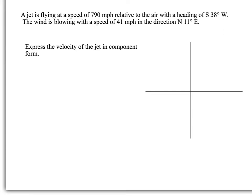The jet is flying at a speed of 790 miles per hour relative to the air with a heading of south 38 degrees west. The wind is blowing with a speed of 41 miles per hour in the direction north 11 degrees east.